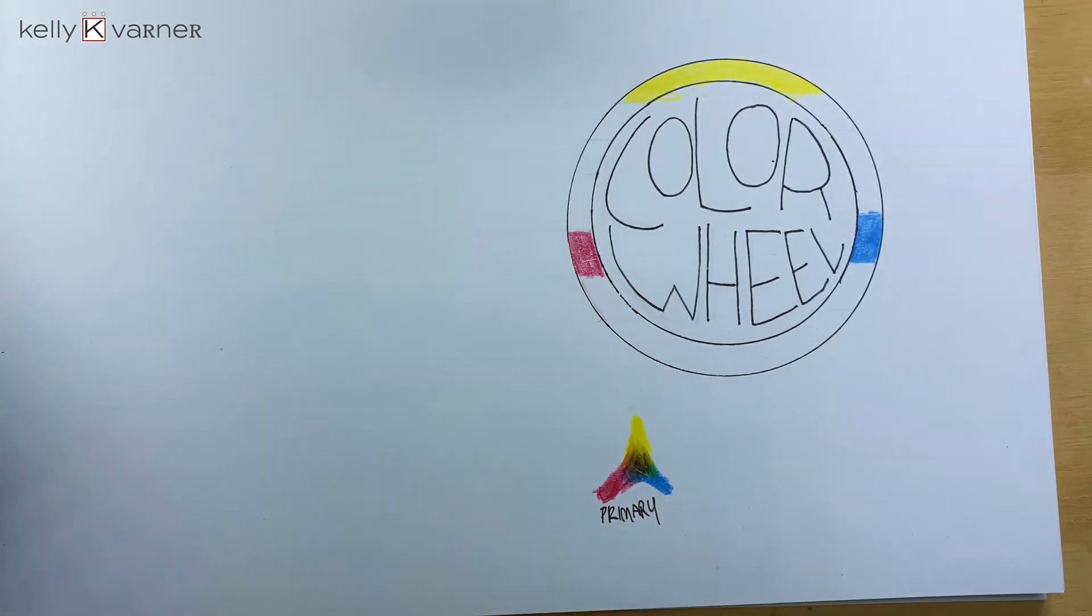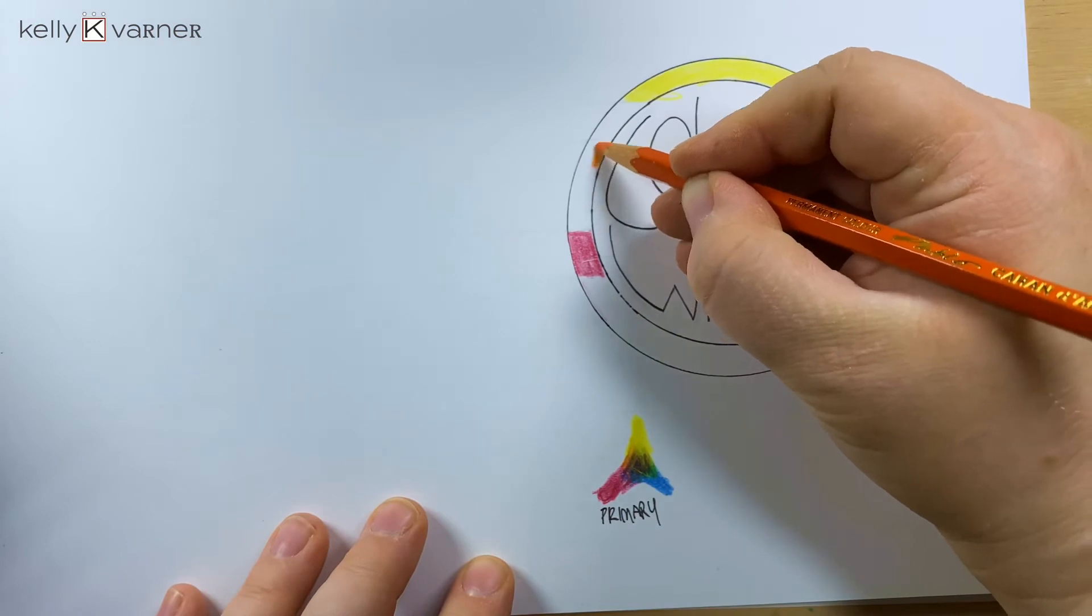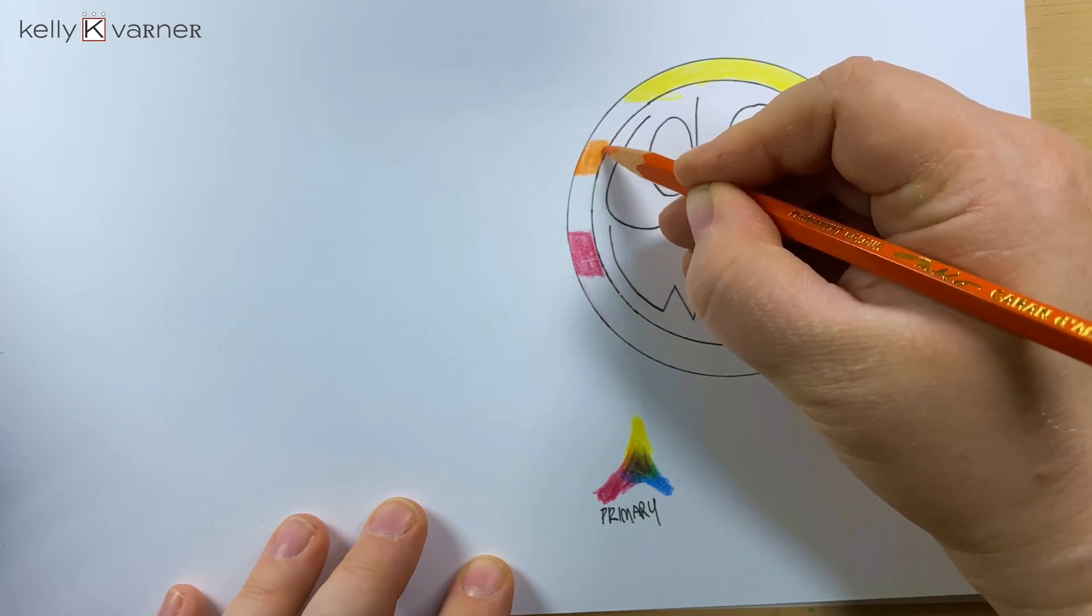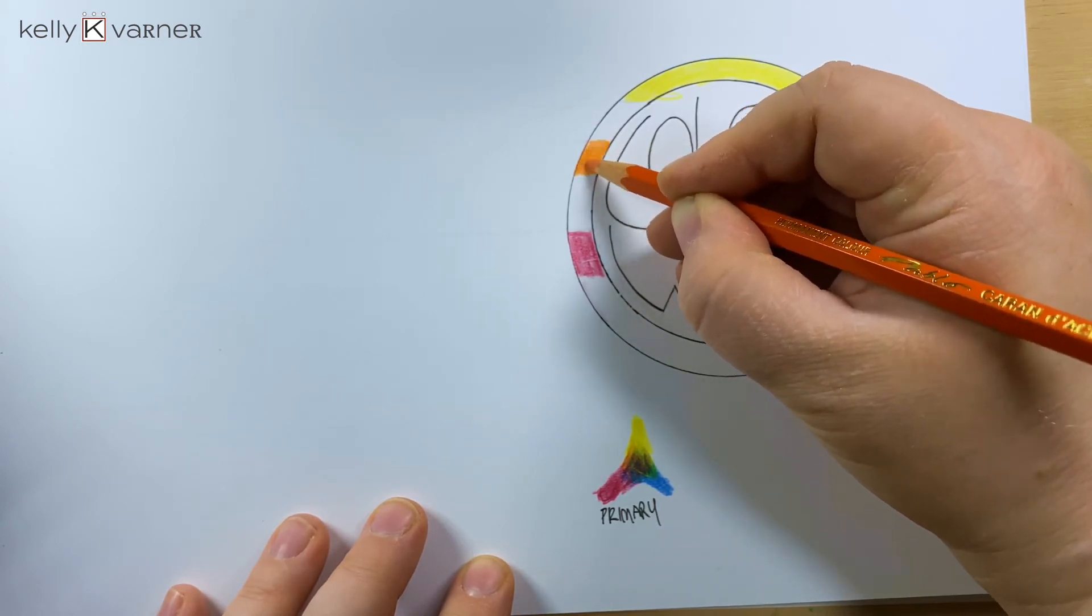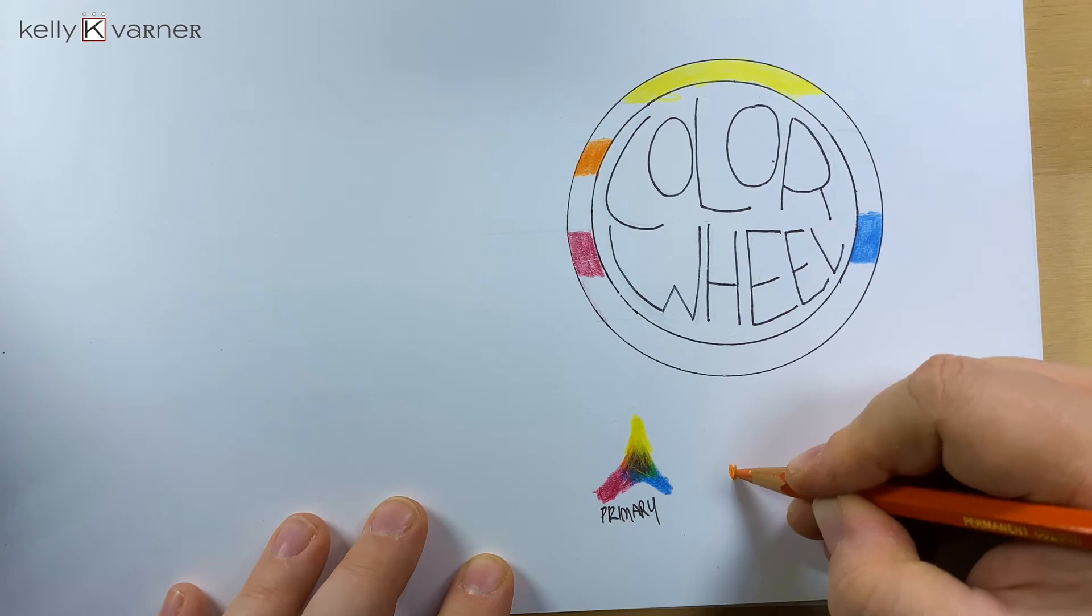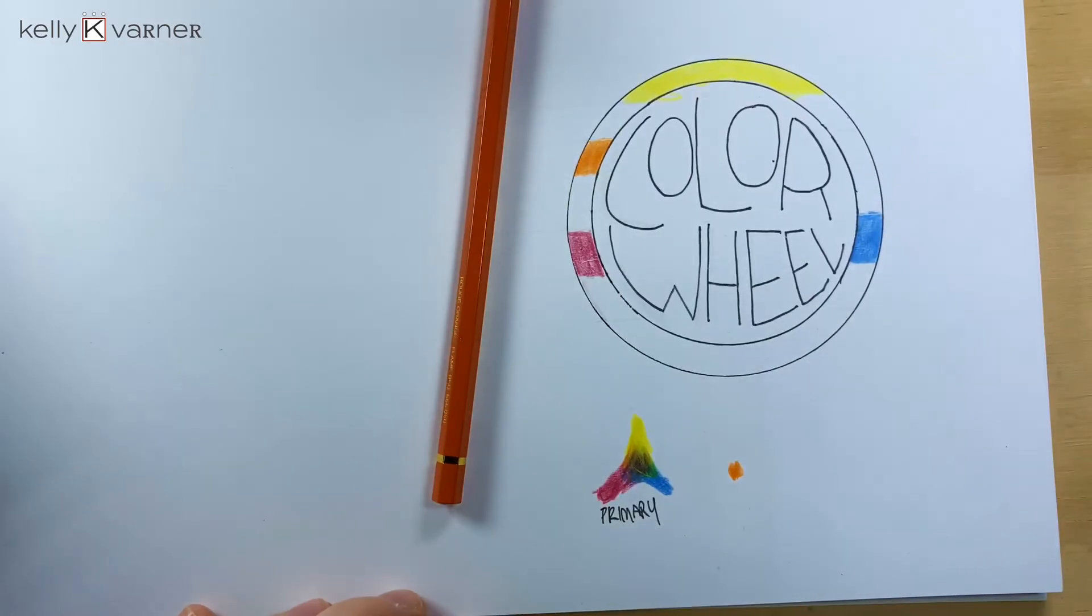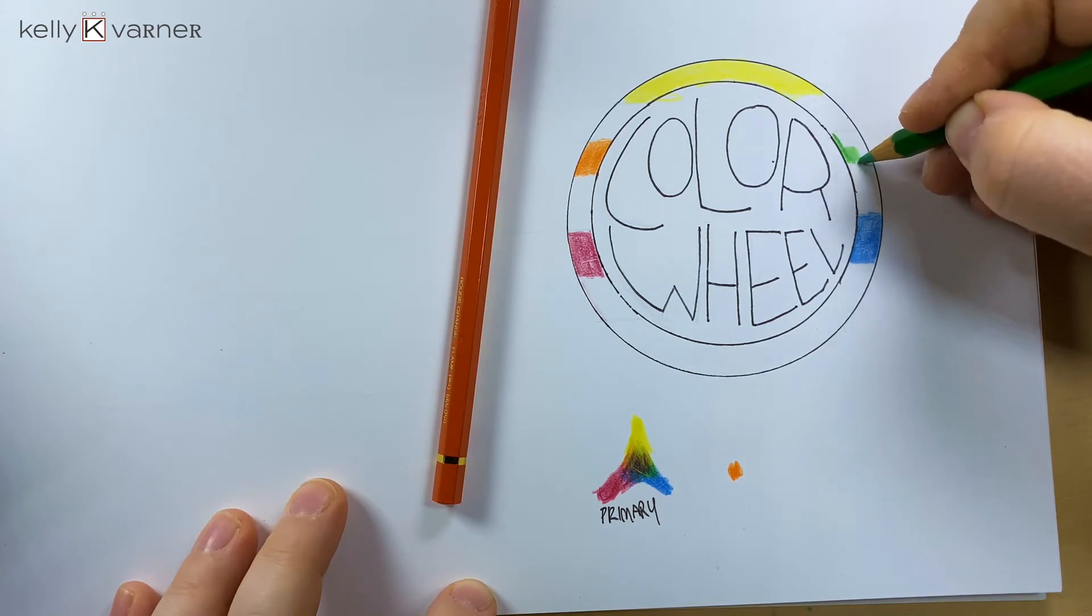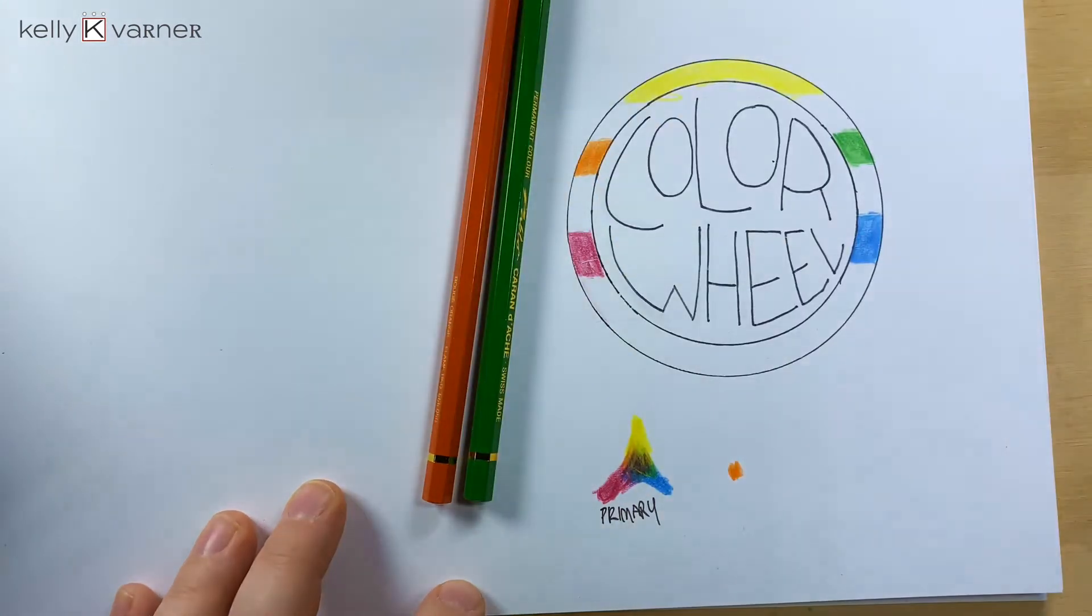So if you can see on here, we have orange. Yellow and red is going to make orange. And yellow and blue is going to make green.